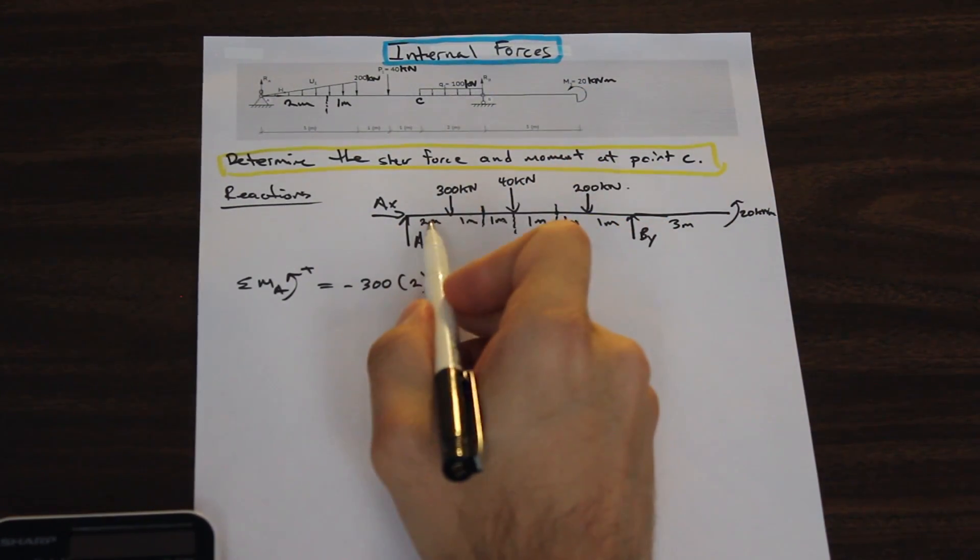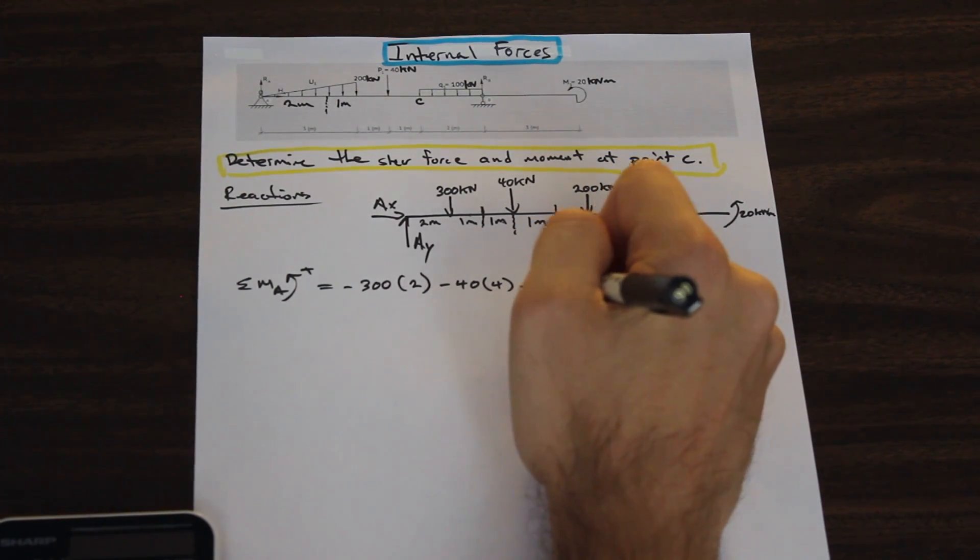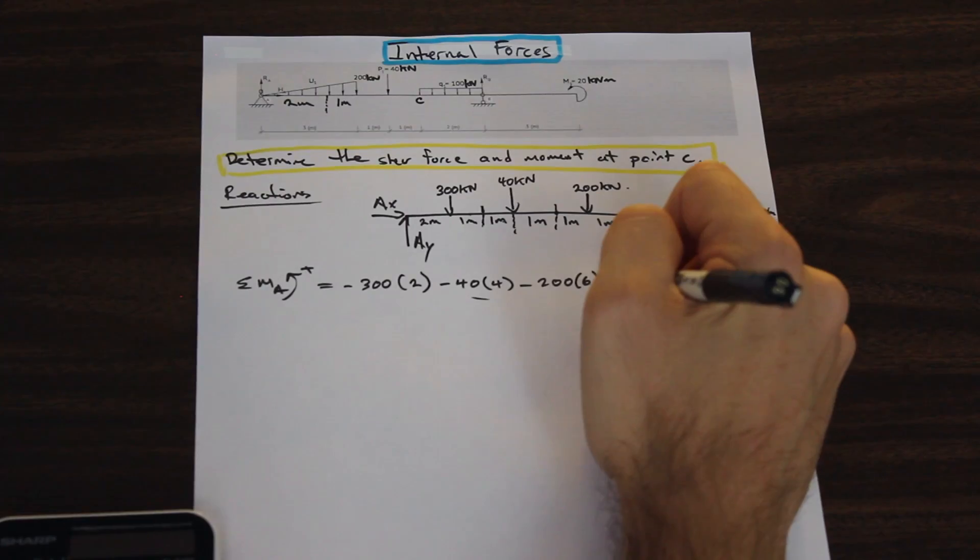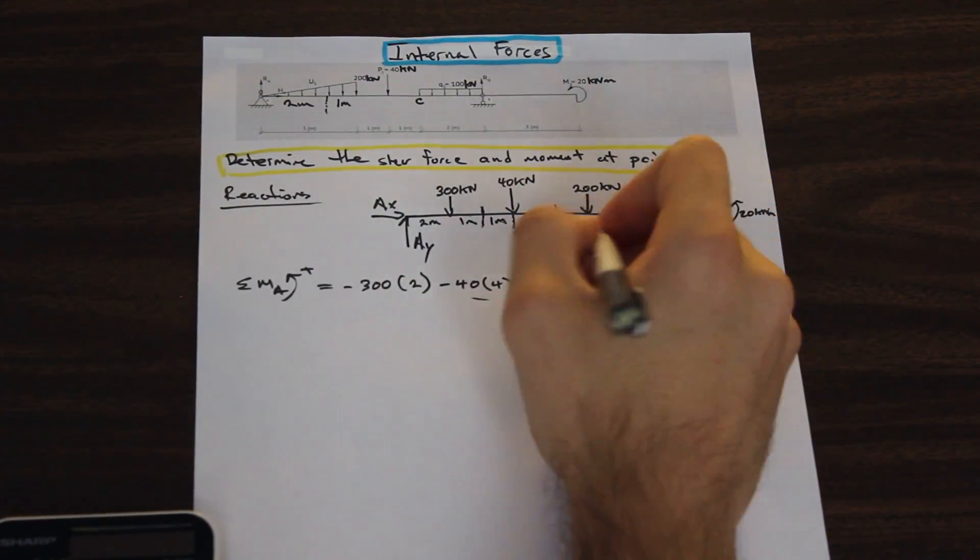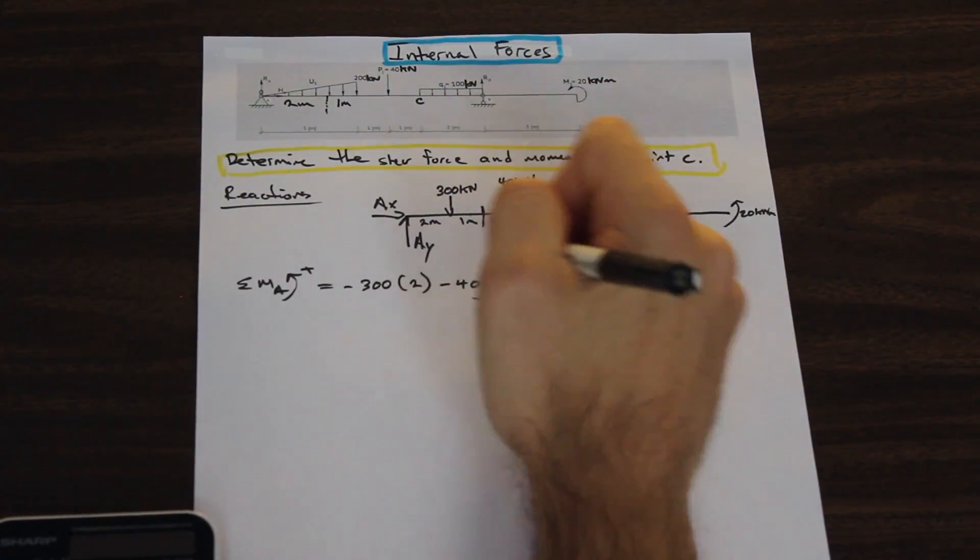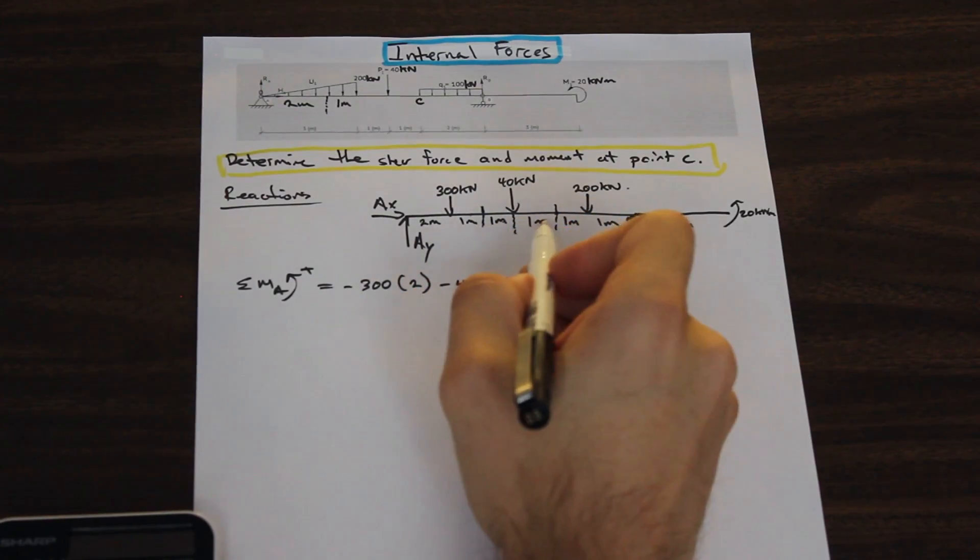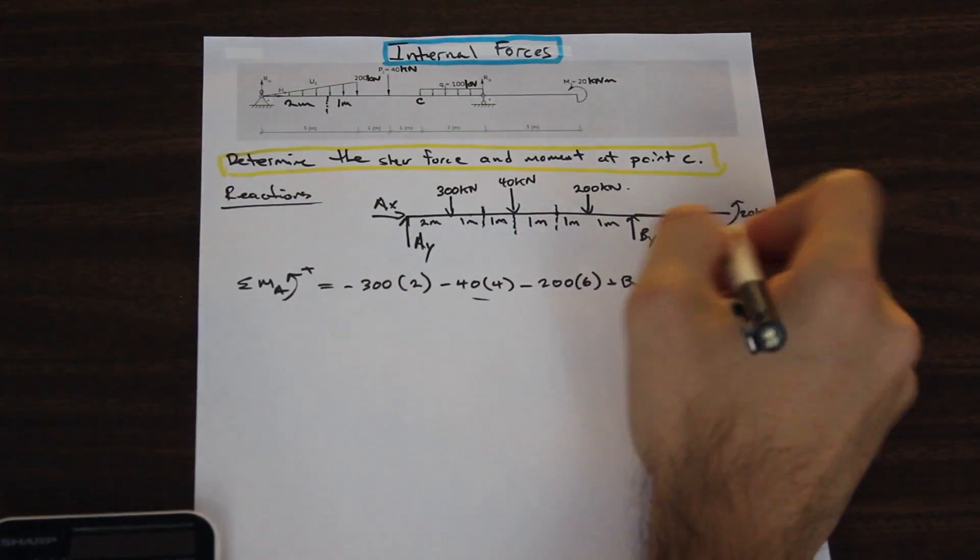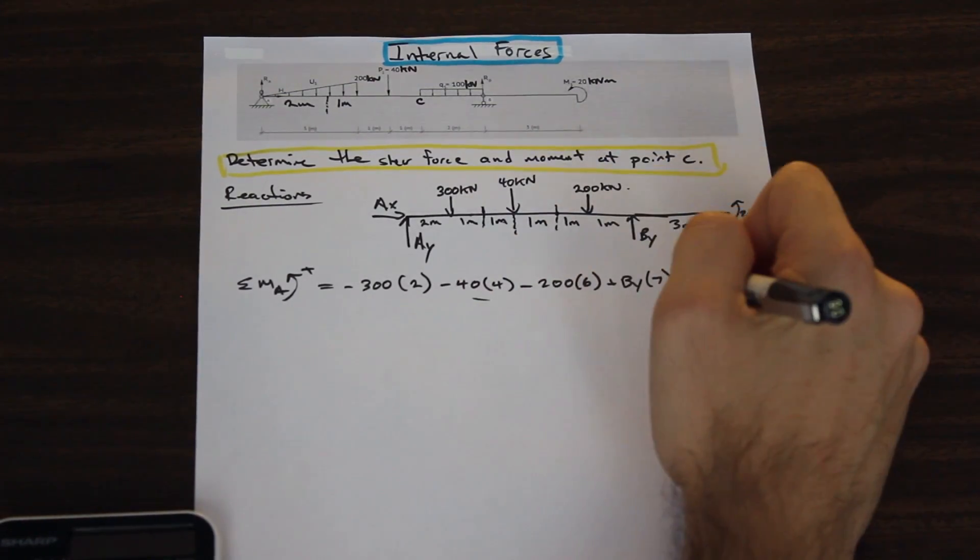And how far is that? Well, that's 2, 3, 4, 5, 6 meters. We have BY. That's acting in the opposite direction. So that's positive, counterclockwise, BY. And that is going to be 2, 3, 4, 5, 6, 7 meters. And finally we have a free moment here of 20 in the positive direction.